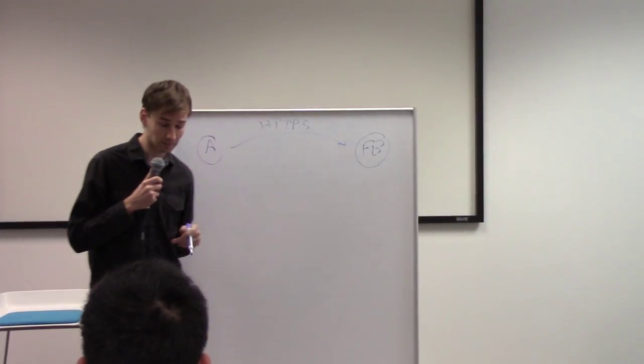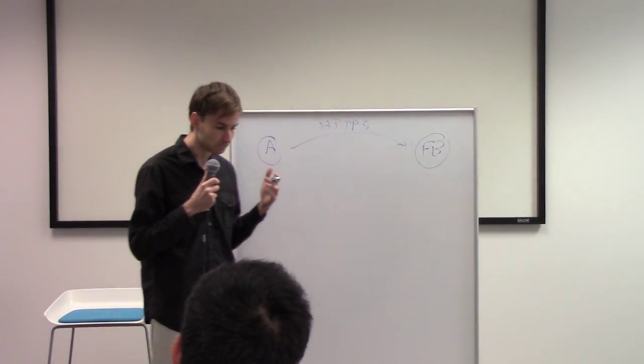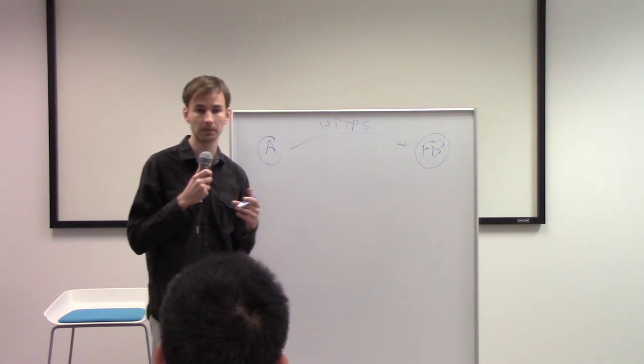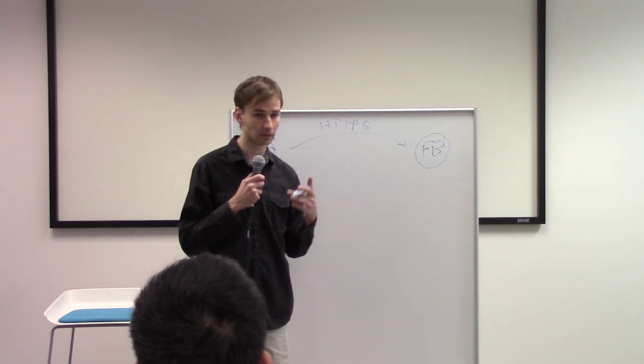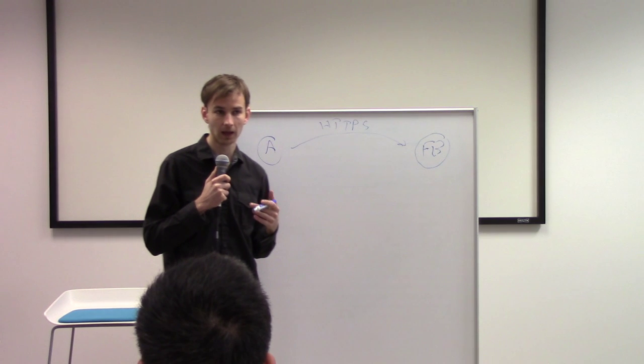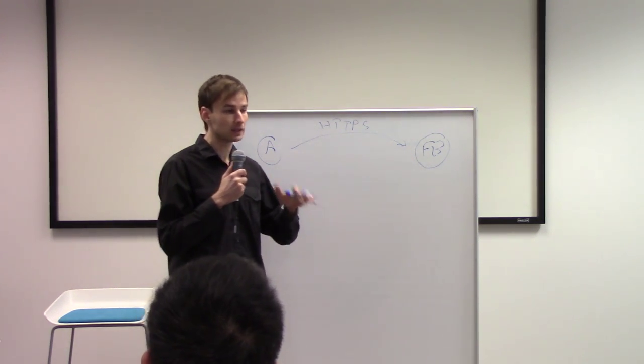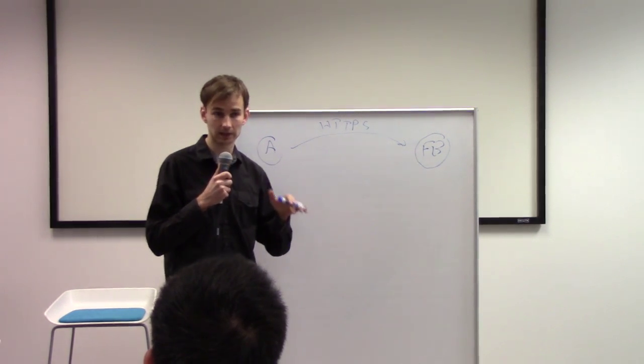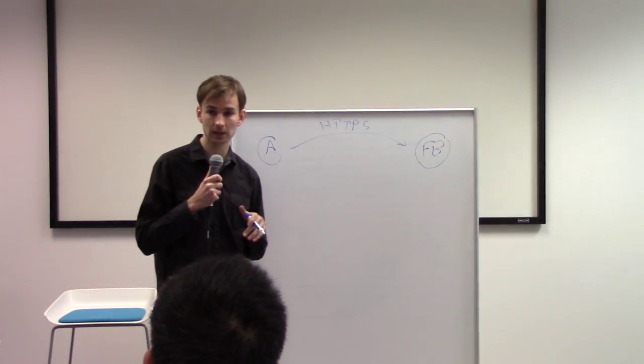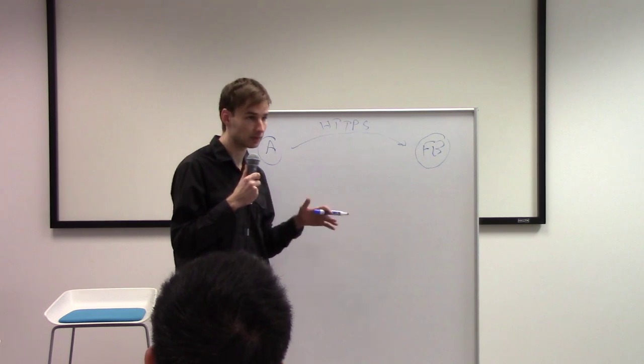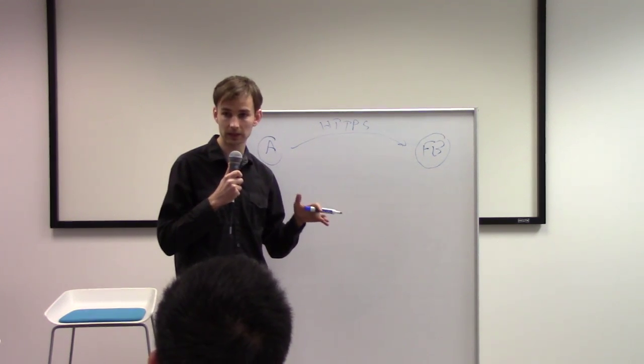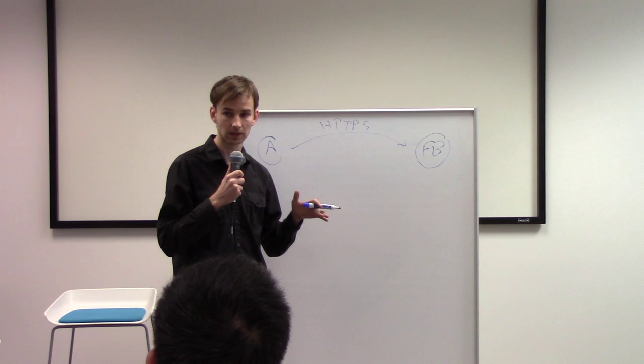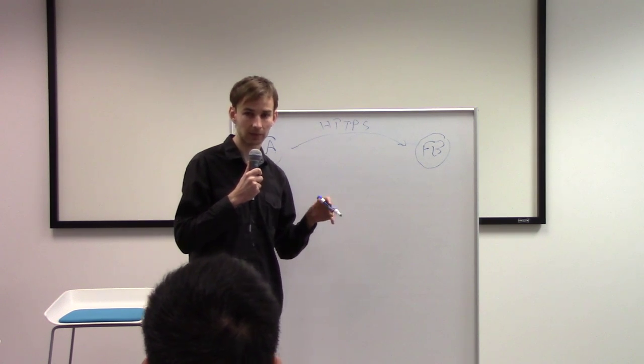In its simplest form, to establish a secure communications channel, every single secure communications protocol needs to do essentially the same thing. It uses what's called asymmetric encryption. Show of hands, who knows what asymmetric encryption is? About half the people raised their hands. Asymmetric encryption is contrasted against symmetric encryption.